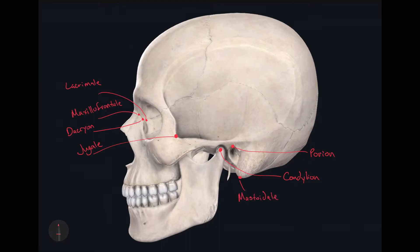Now if we go over to the mandible, more specifically the angle of the mandible, at the most lateral and posterior part of the angle of the mandible, that's going to be called the gonion.